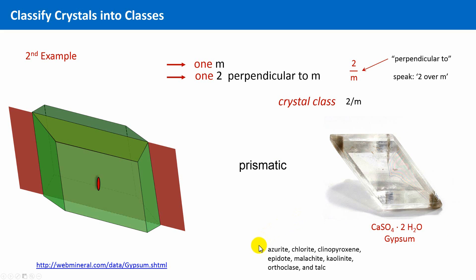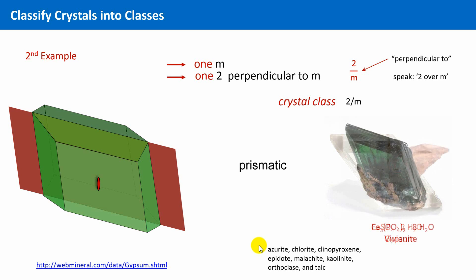Other crystals which belong to the same crystal class, and this means simply that their outer shapes have the same symmetry properties, are azurite, chlorite, clinopyroxene, epidote, malachite, kaolinite, orthoclase, talc, and vivianite, a hydrated form of iron 2-phosphate, also known as blue iron ore, a mineral which is relatively popular with mineral collectors.